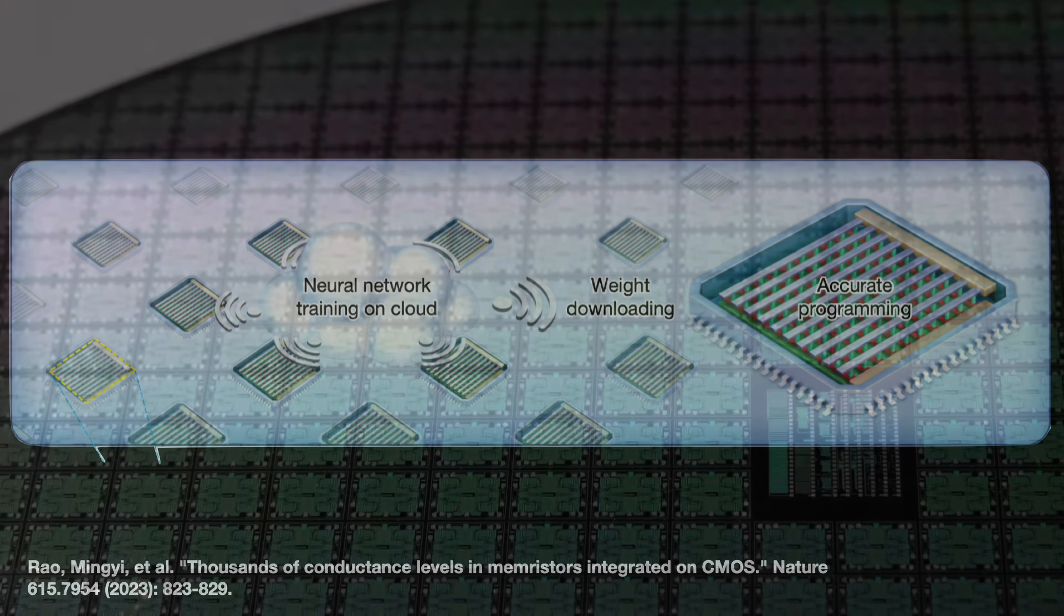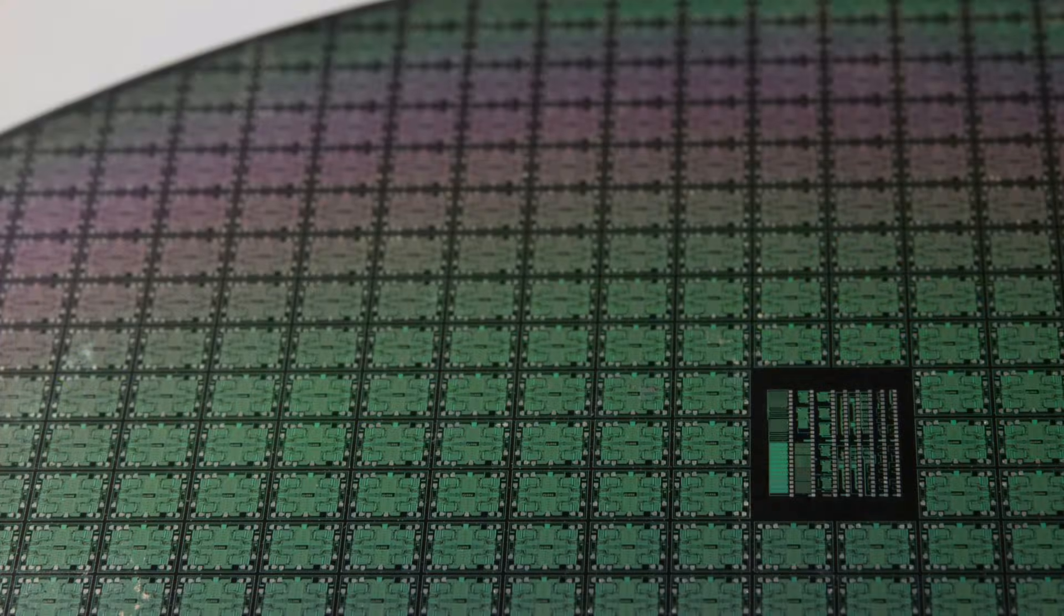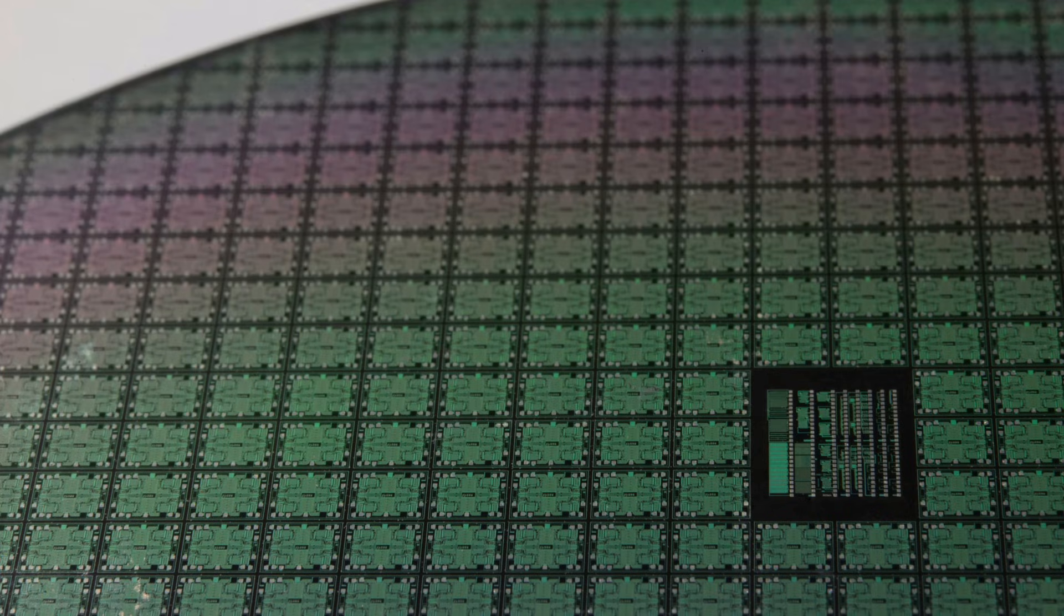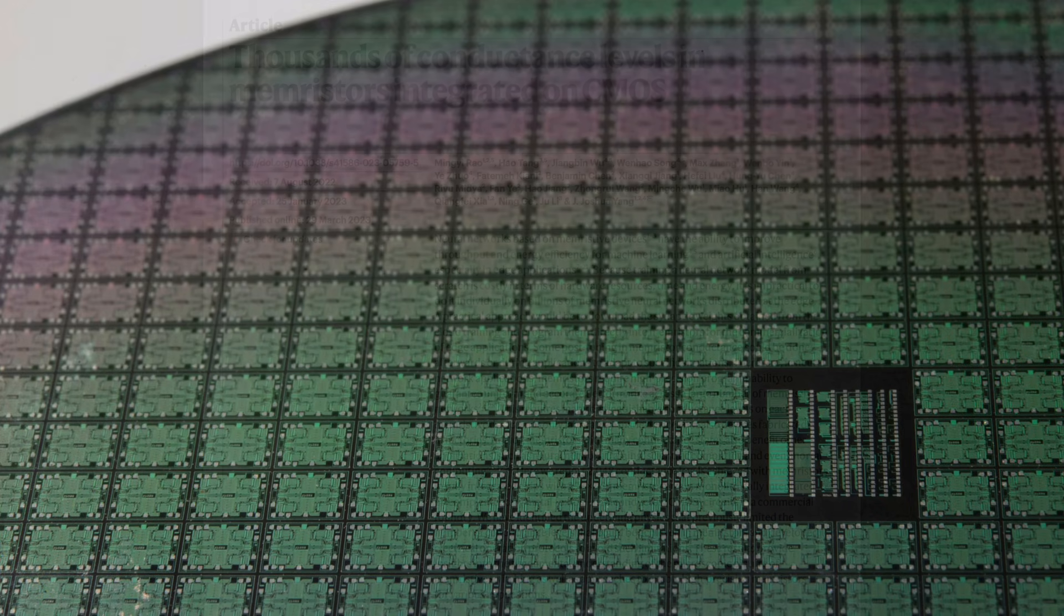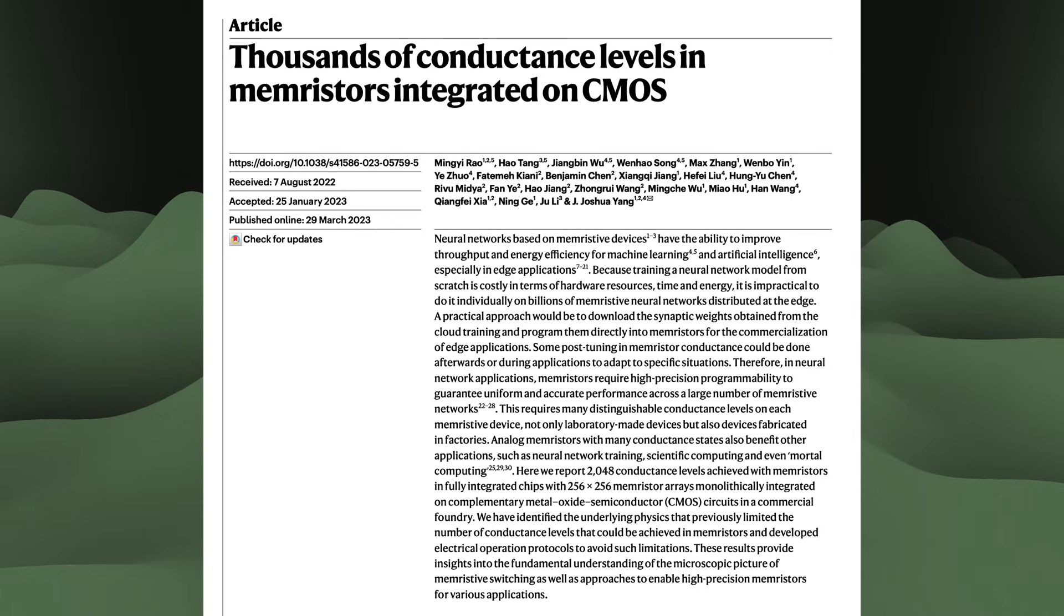Memristors are CMOS compatible. This means that we can make these memristors on top of silicon wafers using traditional semiconductor manufacturing techniques: deposition, photolithography, etch, the works. This opens up the possibility of CMOS-memristor hybrids.